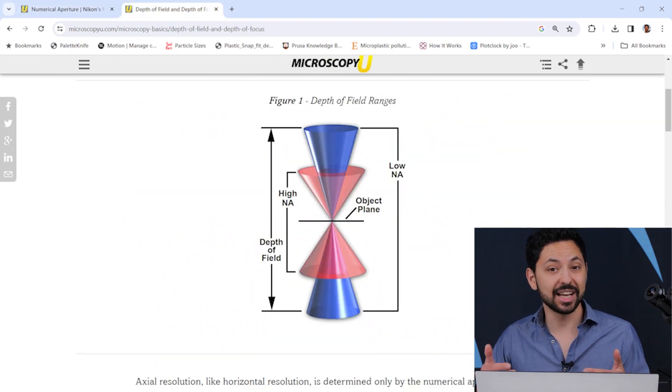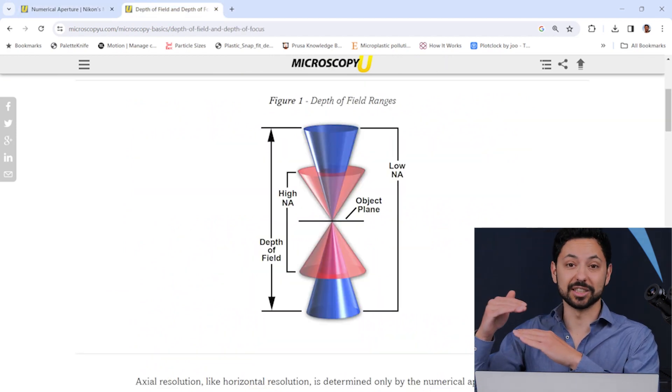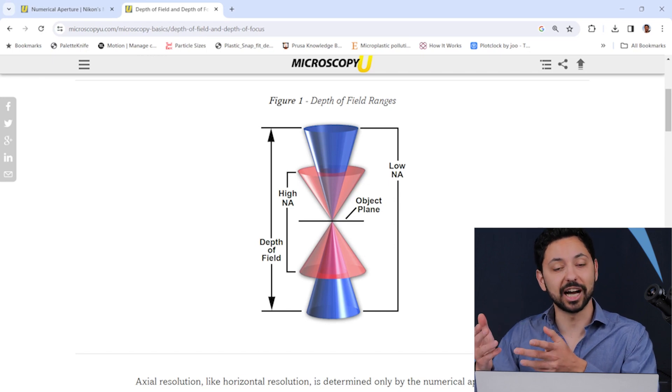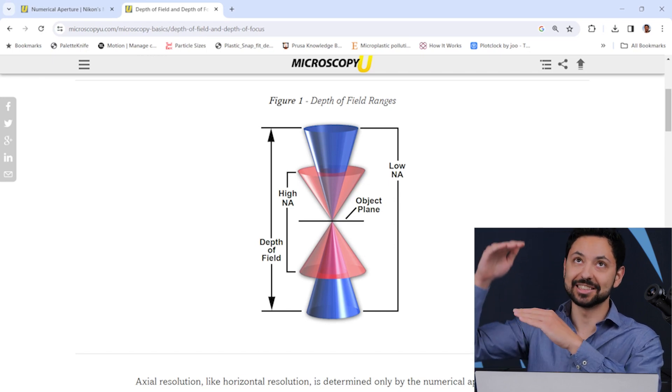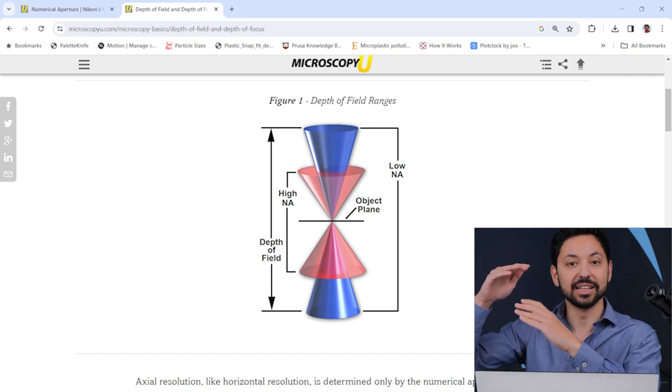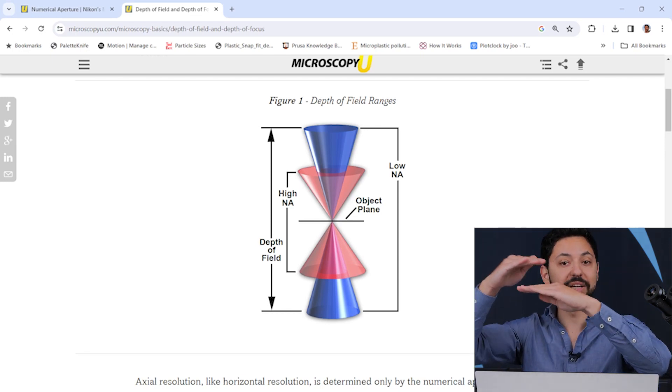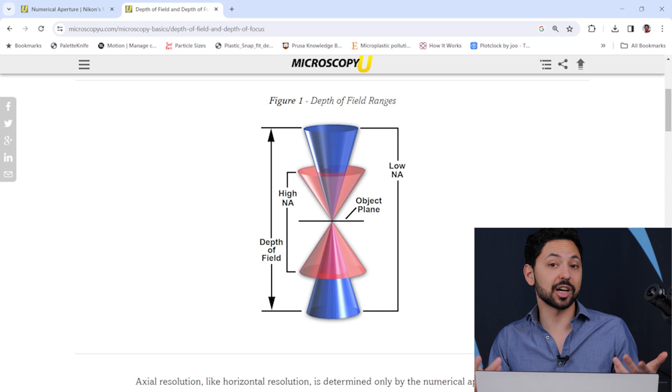Numerical aperture also dictates the depth of field of the sample that you're looking at. And by depth of field I mean how much of the z direction, the up and down direction is in focus at any given time. How big that slice is. And again it just comes down to the geometry and the angles of it.